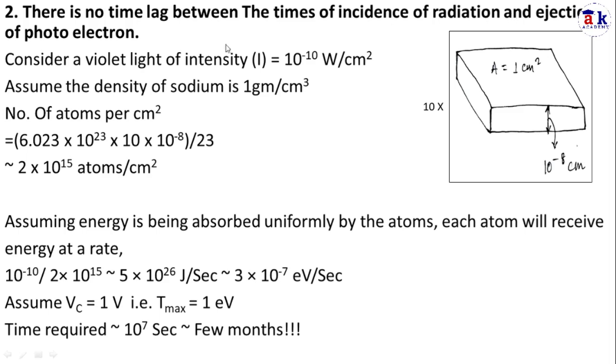The second peculiarity is there is no time lag between the time of incidence of radiation and ejection of photoelectrons. Let's take an example. Consider a block of sodium with area 1 cm² and thickness 10⁻⁸ cm. We shine violet light on this block whose intensity is very low, 10⁻¹⁰ W/cm². We are assuming the density of sodium is 1 g/cm³.